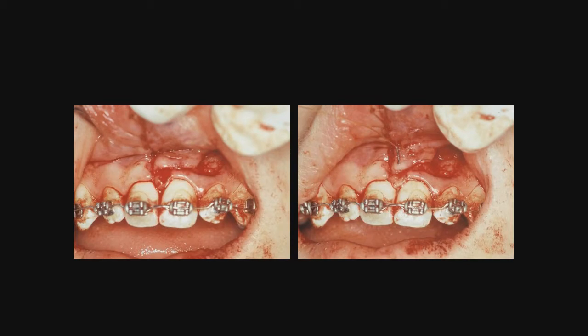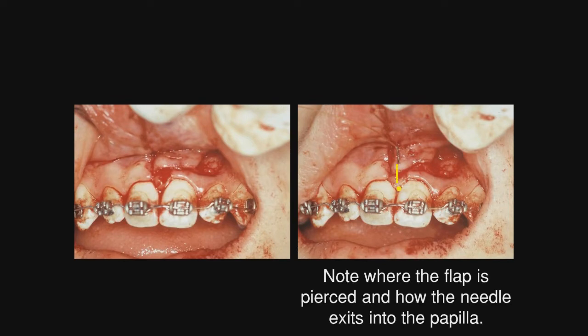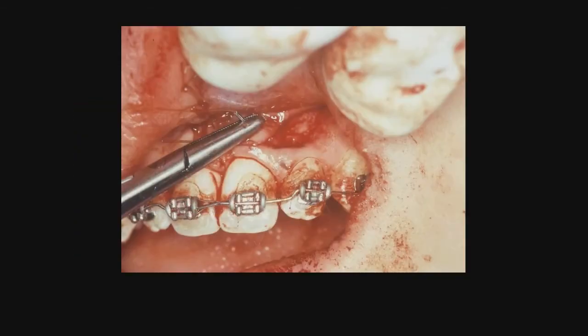Now, let's talk about the suturing on this. You see where we are piercing on the right, and you see where we are exiting in the papilla. Note where the flap is pierced and how the needle exits in the papilla. This will be an interrupted suture to position the flap incisally on the mesial where you want it.